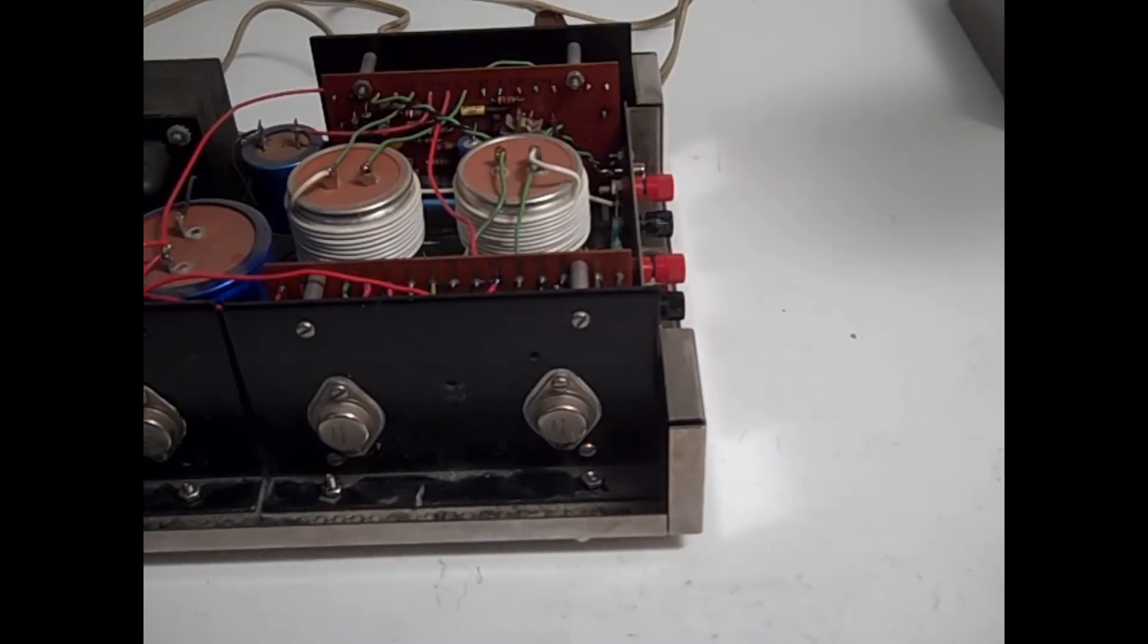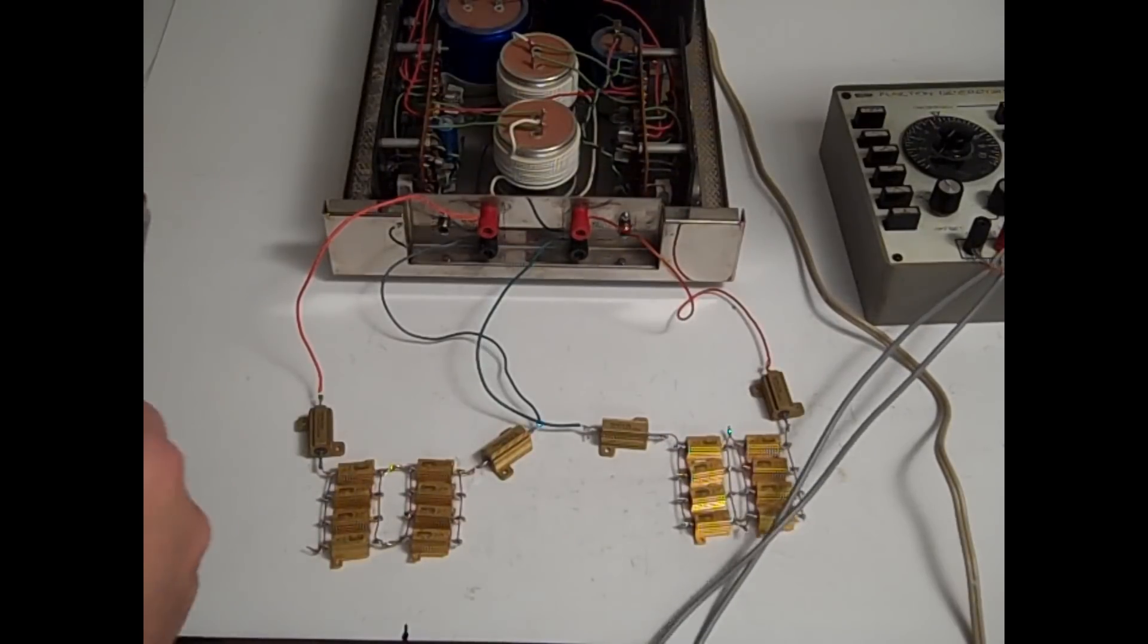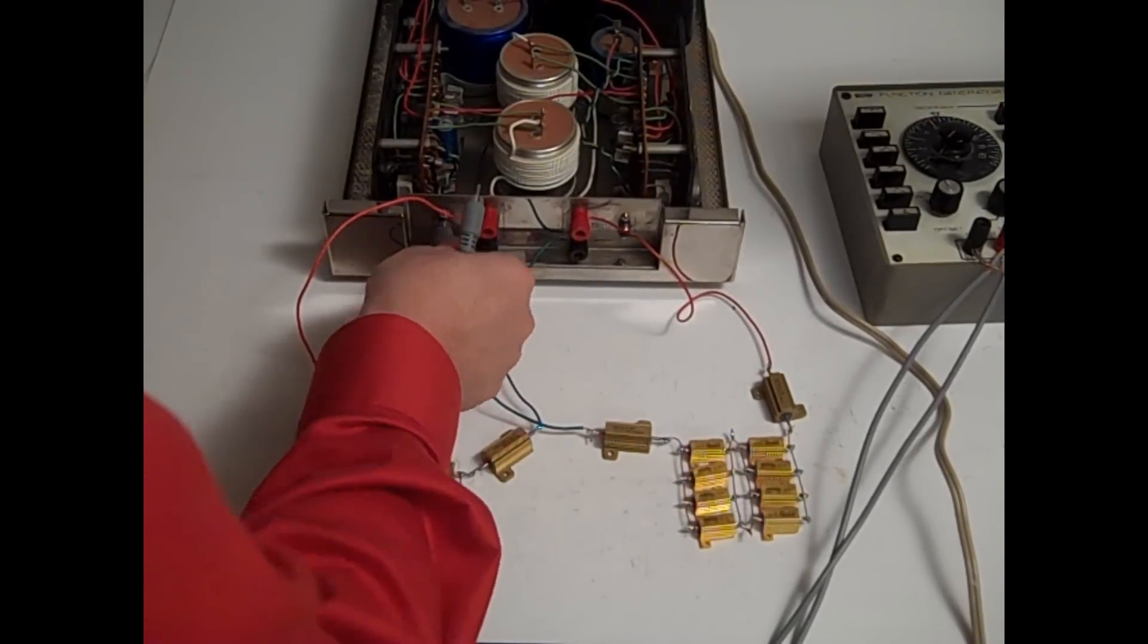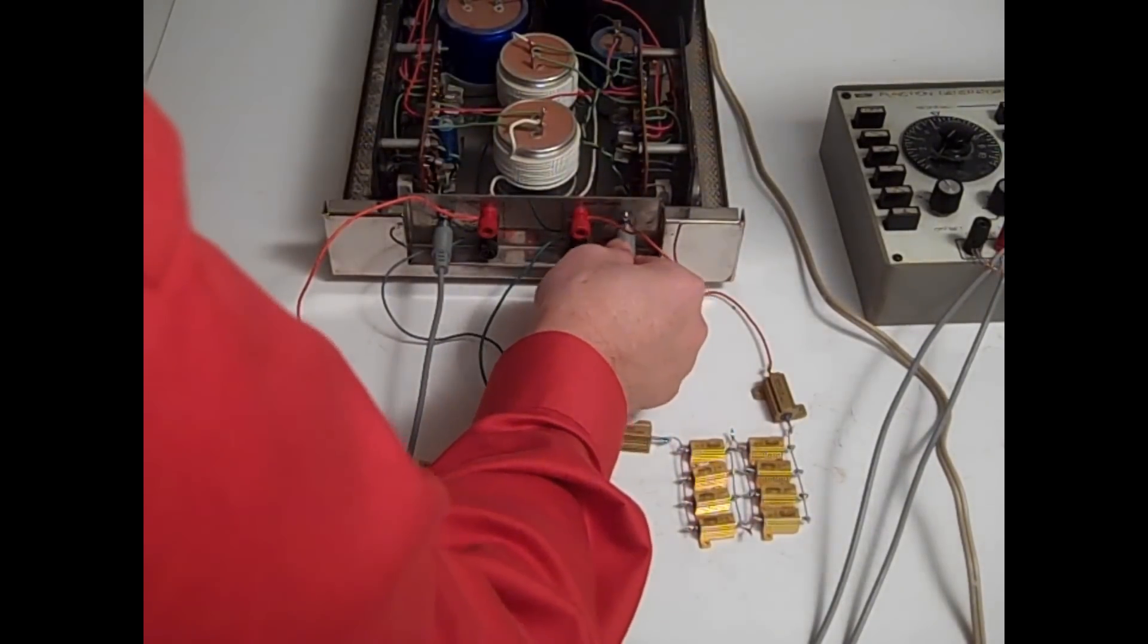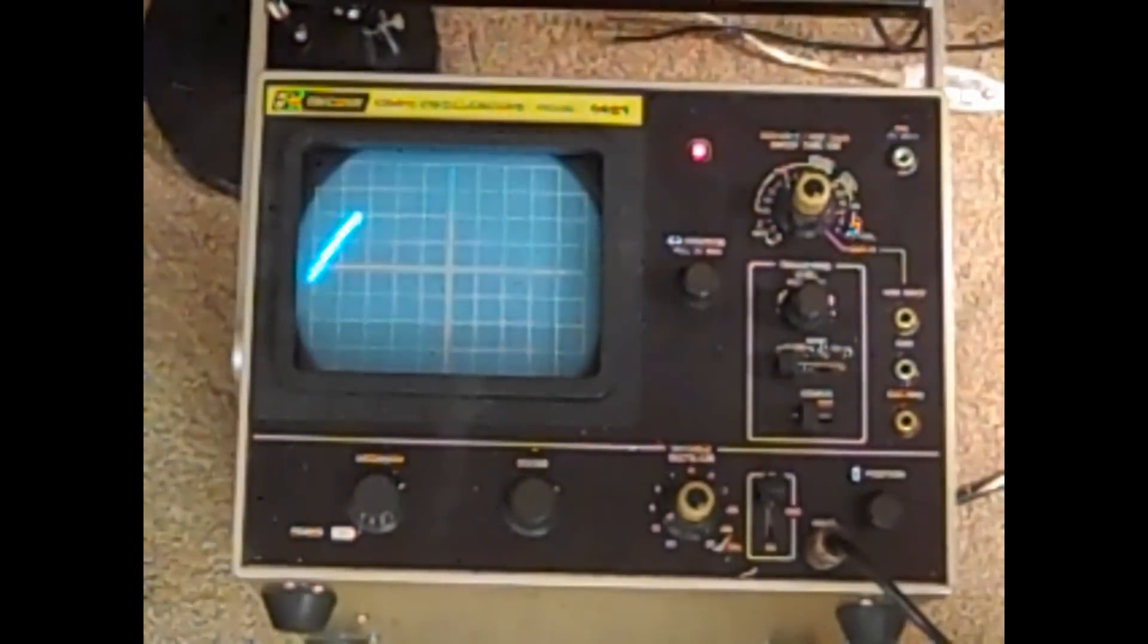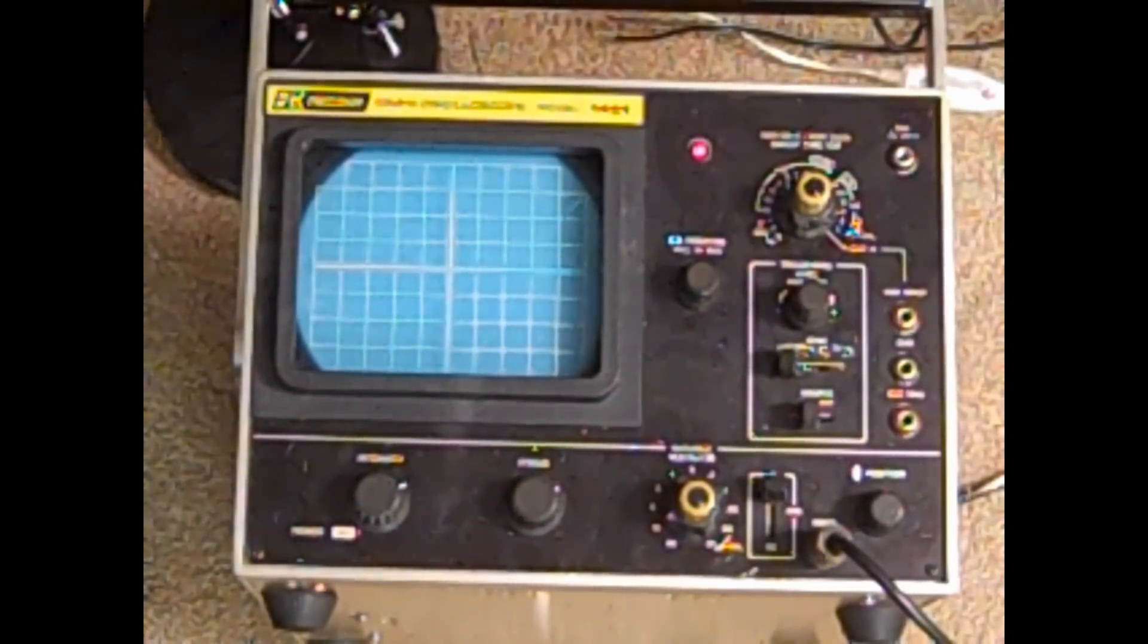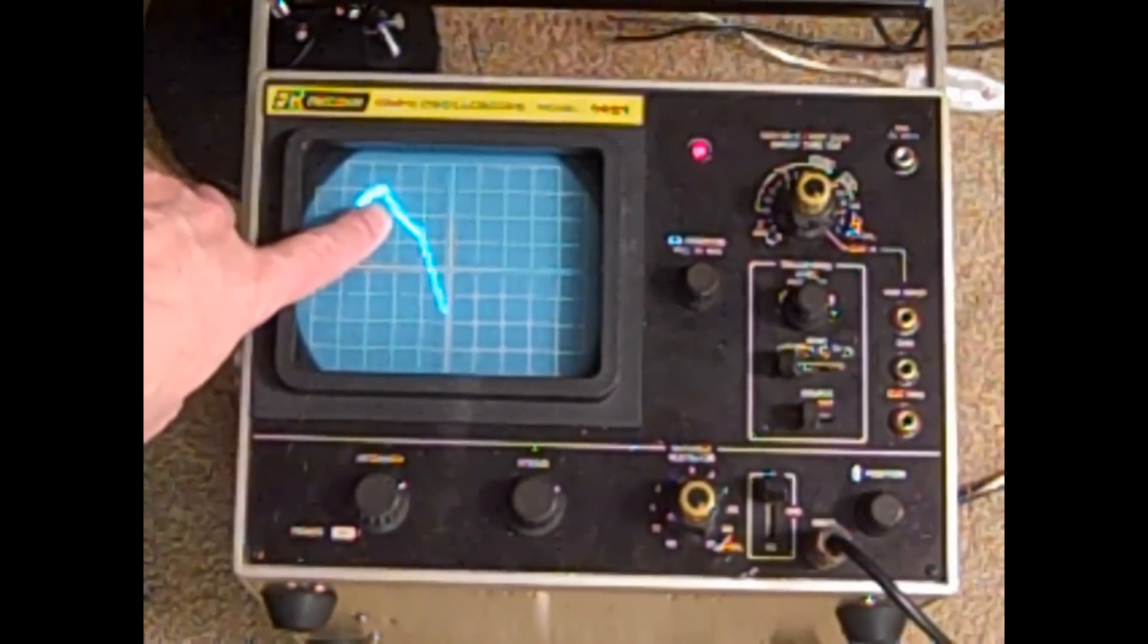What we'll do is connect some dummy loads. The dummy loads are hooked up to the amplifier and we'll hook up a function generator. As we drive the output power up, we see the clipping on the upper edge of the scope waveform. There's the clipping.